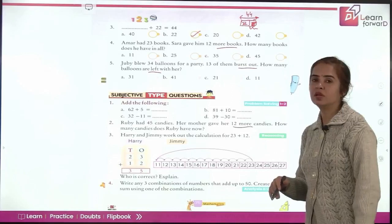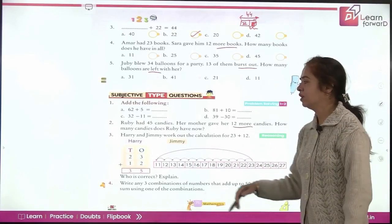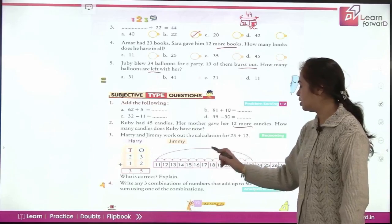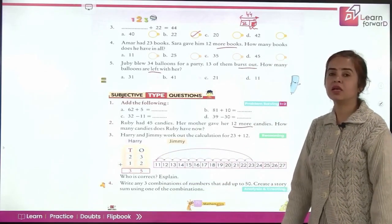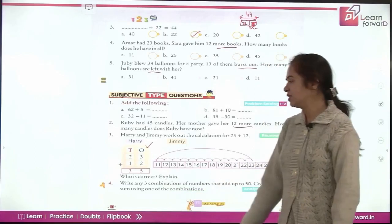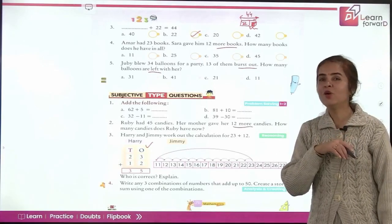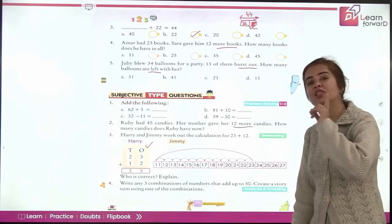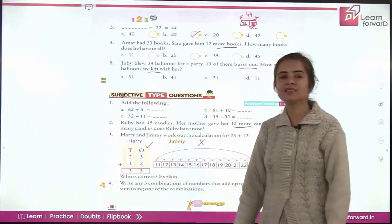So add them and find out what is the total number of candies with Ruby now. Next Harry and Jimmy work out the calculation for 23 plus 12. Harry is doing this way. Jimmy is doing this way. So here Jimmy starts from 23 and he goes back and reaches 11. Whereas Harry is adding the numbers by putting them in correct columns one below the other. Now who is correct? Can you tell? Harry is correct. Why is it correct? Can you explain? When we add it means? Does it mean going backwards? No. It means going forward. So Jimmy is wrong. What is he actually doing? Can you tell? Good children. He is actually subtracting. So this is wrong. And Harry has done it perfectly. And his answer is correct. That is 35.